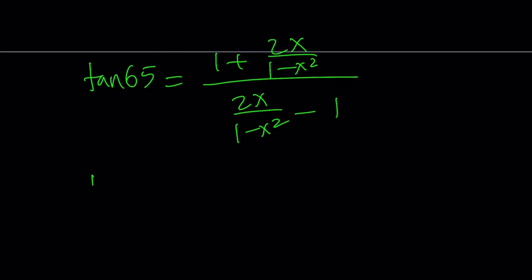1 plus 2x over 1 minus x squared, and then just switch the bottom like this, so that everything looks more positive this way.